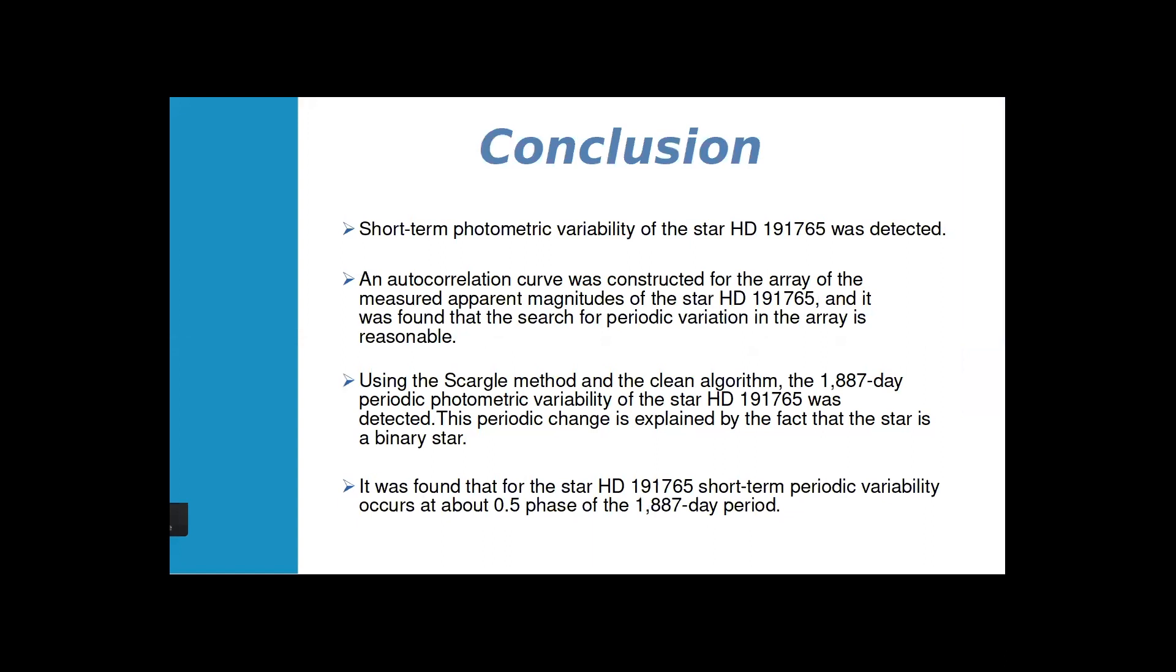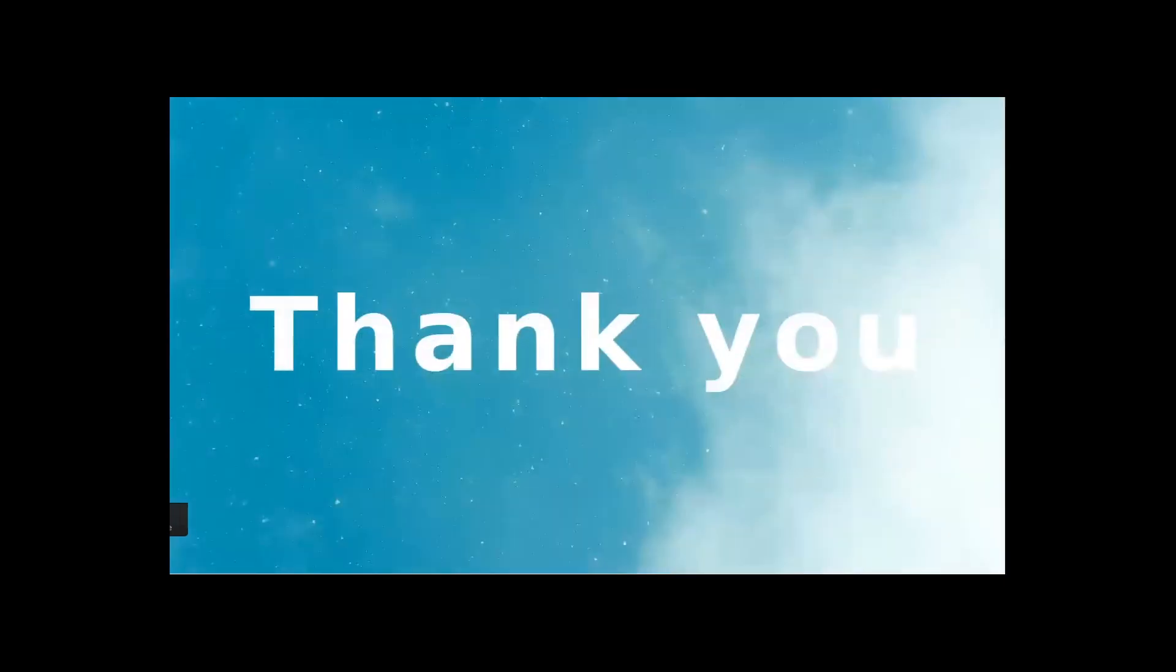As a conclusion, short-term periodic variability was detected. Using the autocorrelation curve and Scargle clean method, we found 1.889 days periodic photometric variability. We explain this by the fact that this star is a closed binary system. We found that short-term periodic variability occurs at 0.5 phase of this period. That's all about our work.